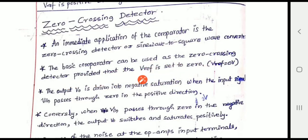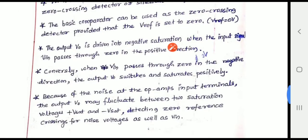The basic comparator can be used as a zero crossing detector provided that V reference is set to zero volts. If the V reference is set to zero volts in the basic comparator, it can function as a zero crossing detector — that's why it is called an immediate application of the comparator.